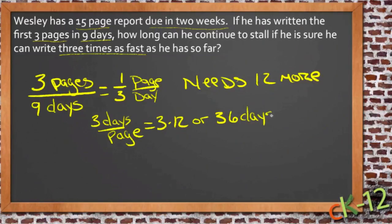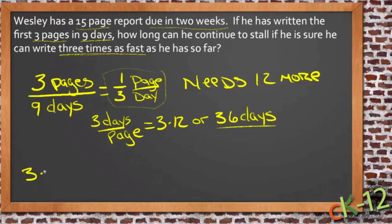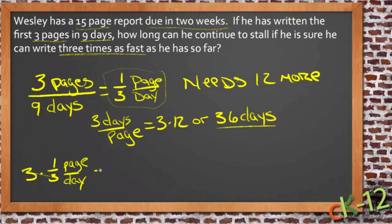Obviously he's going to have to step up his pace a lot. If he thinks he can write three times as fast as he had, then instead of writing at a third of a page per day, we'd have three times one third of a page per day. That means he'd write a whole page per day, because the threes cancel. So if he writes three times as fast, he'll write one page per day.